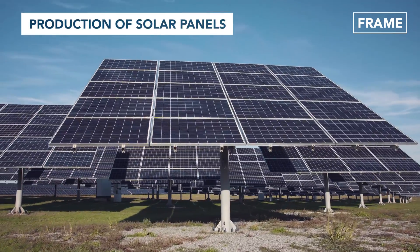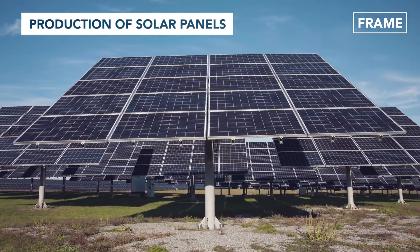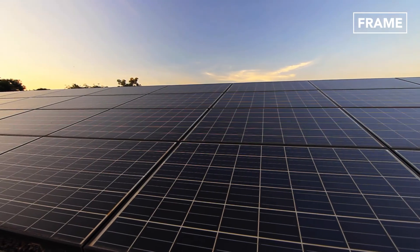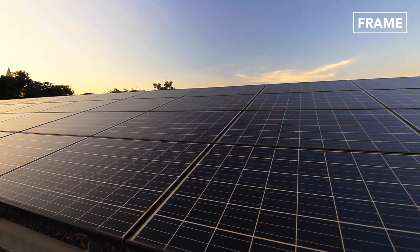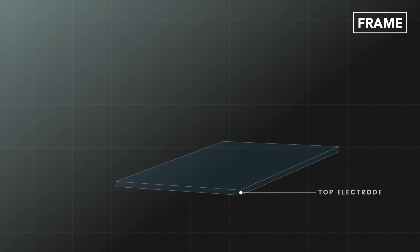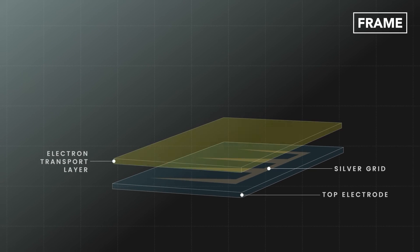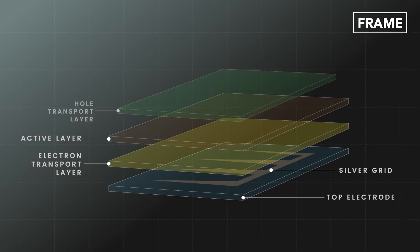But where do solar panels come from and how are they made? Solar panels are constructed from multiple solar cells, sometimes referred to as photovoltaic cells, which are connected together to work as one panel.